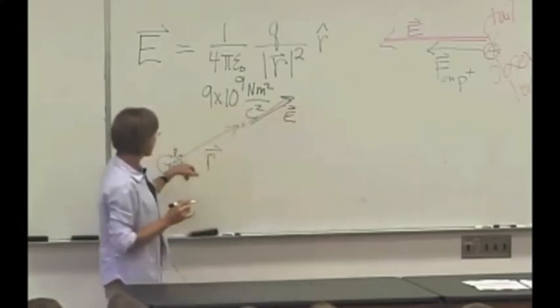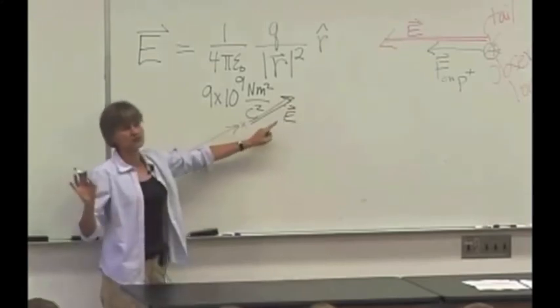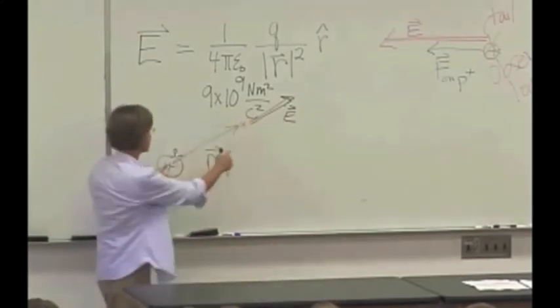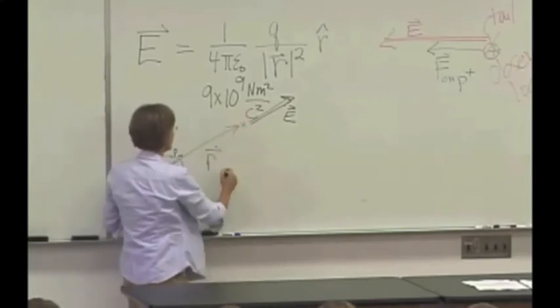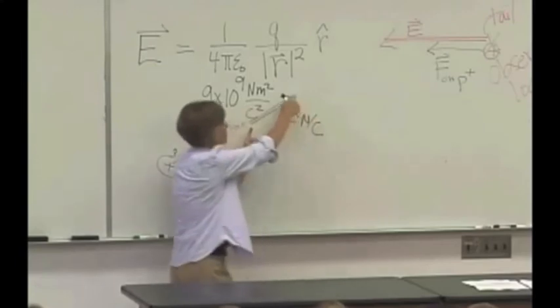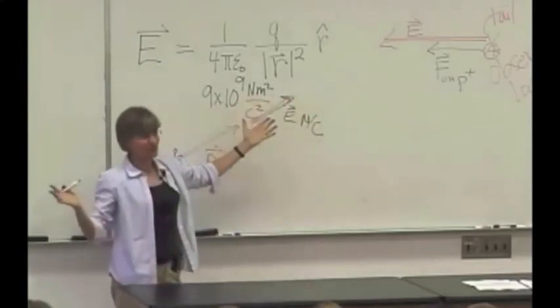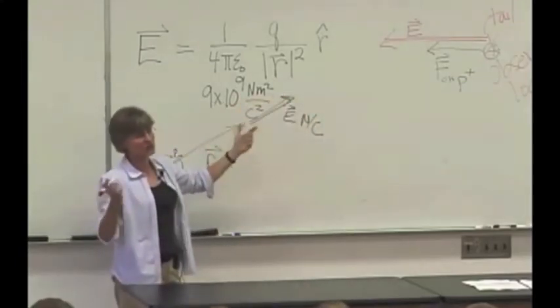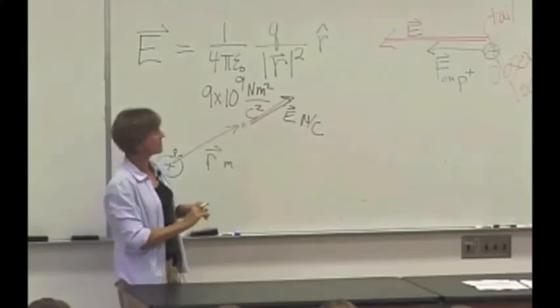And notice that we're now drawing things with two completely different dimensions on the same picture. This is units of meters, and this has units of newtons per coulomb, so of course it isn't really going to be the same size. We have to do some scaling to make this come out right.